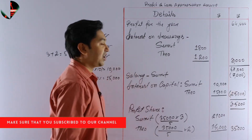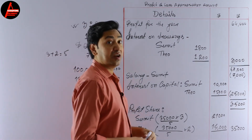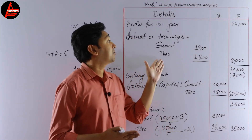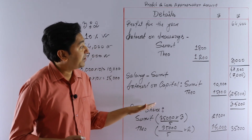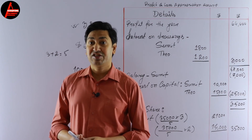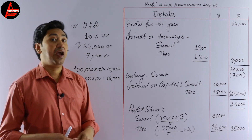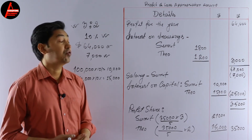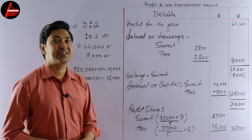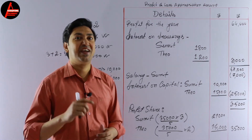We have completed the Profit and Loss Appropriation Account. Remember: add the incomes first, then subtract all the expenses, and finally distribute the remaining profit. I hope you enjoyed and understood this lesson. If it was helpful, please share with your friends. In my next video, I'll show you how to prepare the current account for these two partners. See you soon — bye bye and take care.